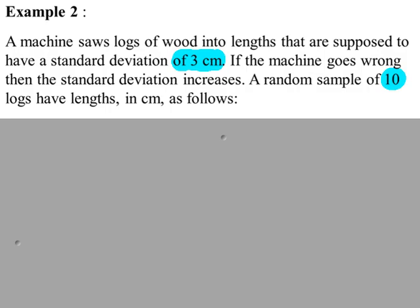Example 2. A standard deviation is given, so we're not going to work with this value — we're going to square it to get the variance. So the variance is 9. The machine goes wrong if the standard deviation increases, so we're working with a one-tail test. H0 is sigma-squared equals 9, H1 is sigma-squared greater than 9.